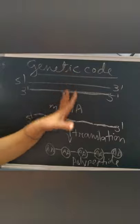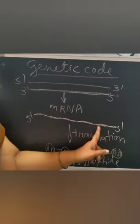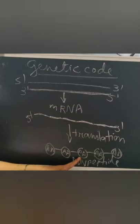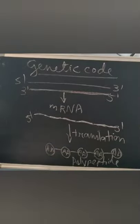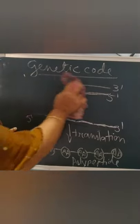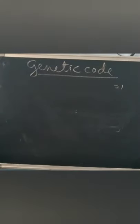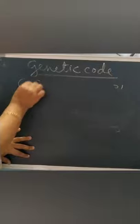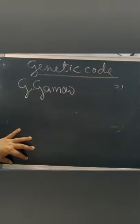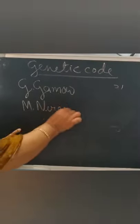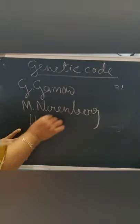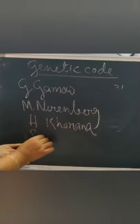The genetic code tells us whatever the sequence in mRNA and what amino acids that sequence codes for — the relationship between nucleotide sequence on mRNA and the amino acid sequence in the polypeptide. Now let's see who discovered this genetic code. It was George Gamow, Hargobind Khorana, Marshall Nirenberg, and Severo Ochoa.